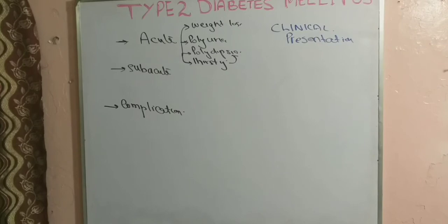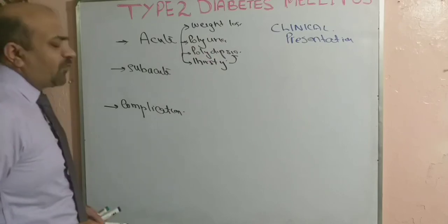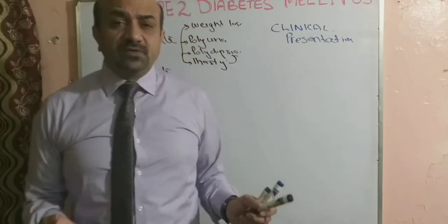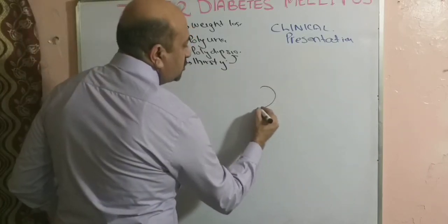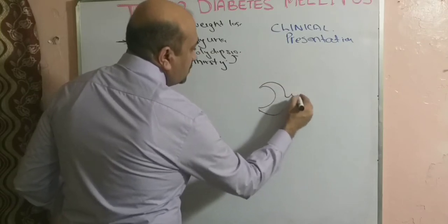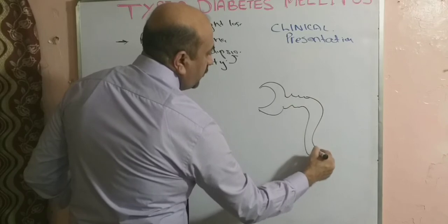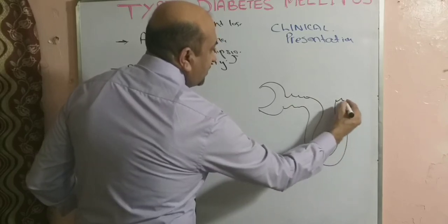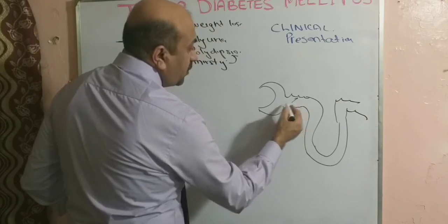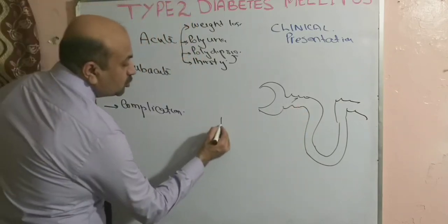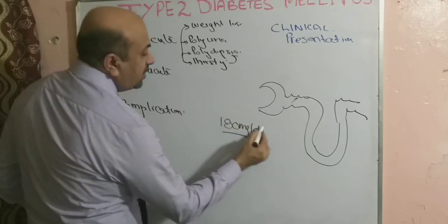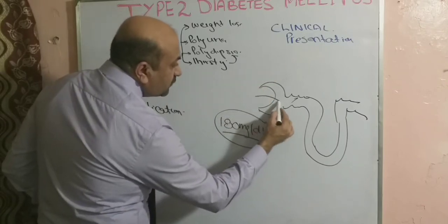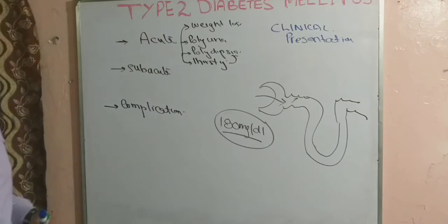The reason patients are always asking for water relates to what happens in the proximal convoluted tubules. When blood glucose goes higher than 180 milligrams per deciliter, it starts flowing into the tubules — this is known as the renal threshold. Normally, glucose is reabsorbed in the proximal convoluted tubules, but once these become saturated, glucose keeps coming down and spills out.